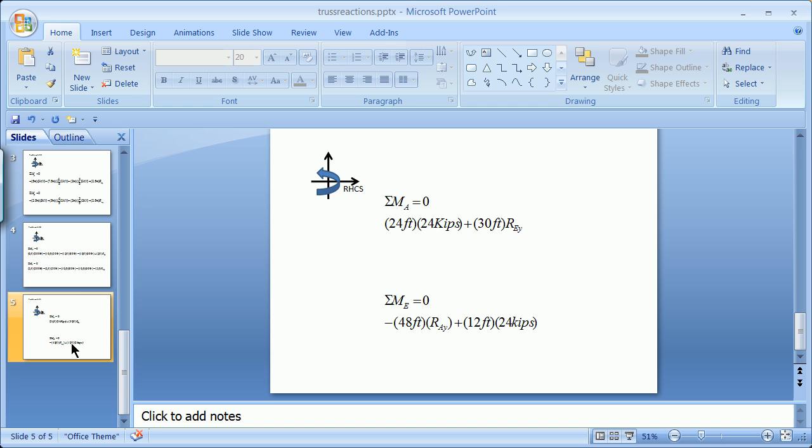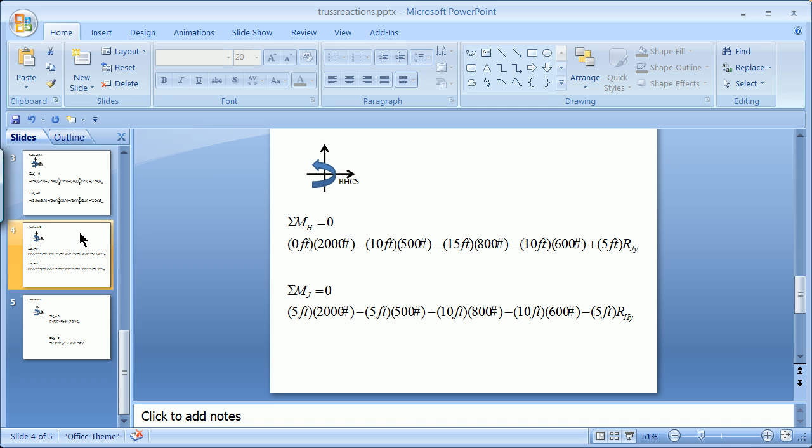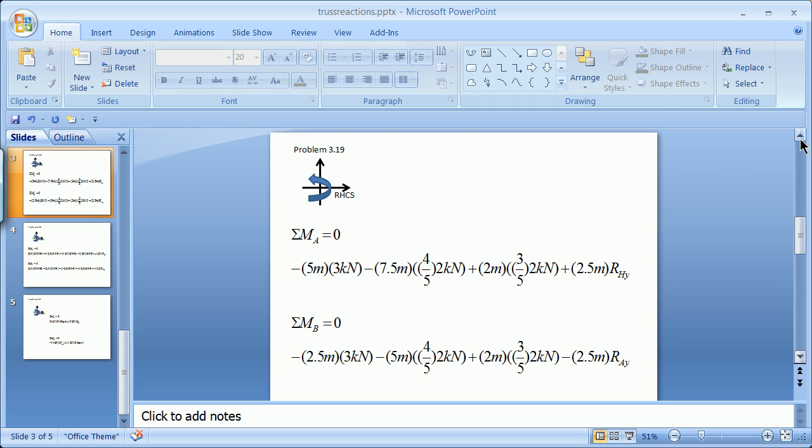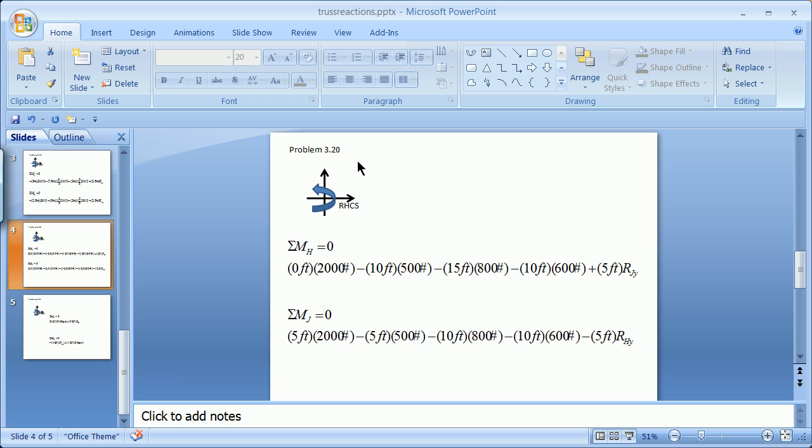This would be 3.20, let's see this was 3, I'm losing my top here, so this is 3.19, 3.20, 3.20.